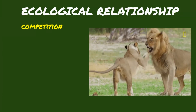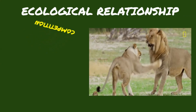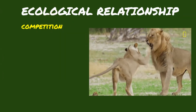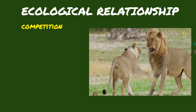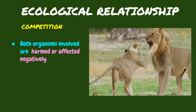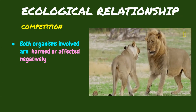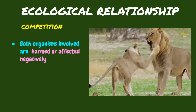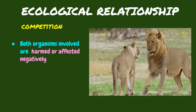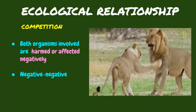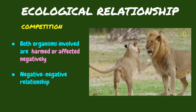In the ecosystem, competition takes place when organisms compete for limited resources like food, space, shelter, territory, and mates. Competition may happen between organisms of the same species or between different species. In competition, both organisms involved are harmed or affected negatively. It has a negative-negative effect on the organisms.